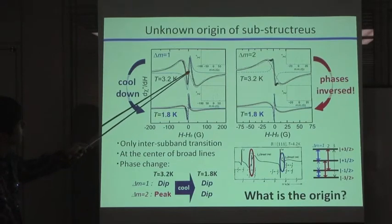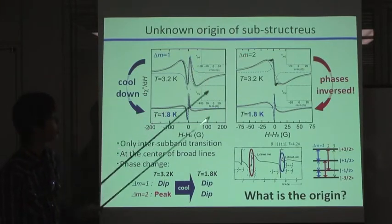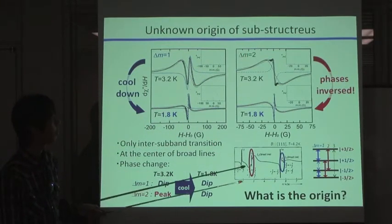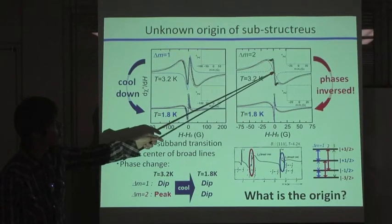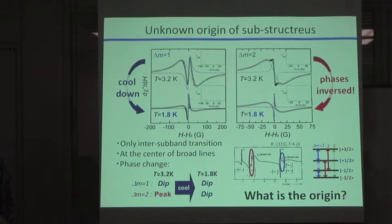So, negative and negative. In contrast, if you see the M2 transition, the phase of the fine structure inverts from positive to negative. These interesting features have been known for more than 30 years.